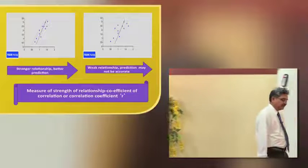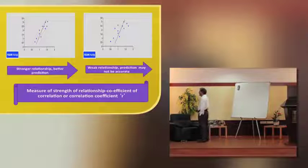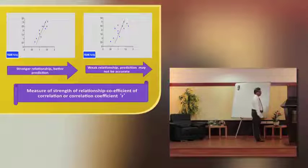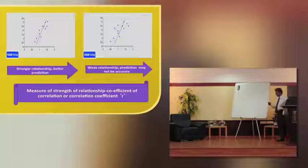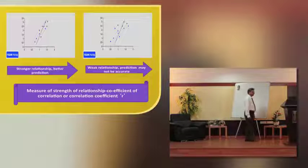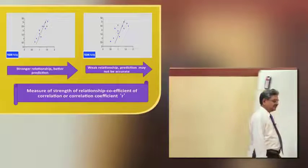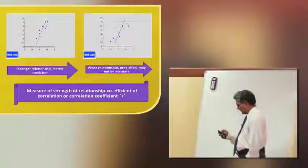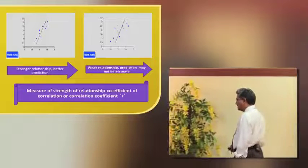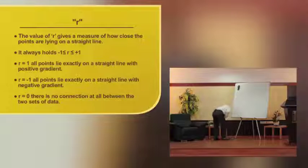With a weak relationship, we can make some predictions but they may not be accurate. We are telling strong or weak just by looking at the graphs — the data are widely or closely scattered around the straight line. Now, what is the mathematical measure for defining the strength of the relationship? We are vaguely saying strong or weak, but how to define the strength? It is done by a statistical term called coefficient of correlation, or correlation coefficient, generally indicated by a small r.